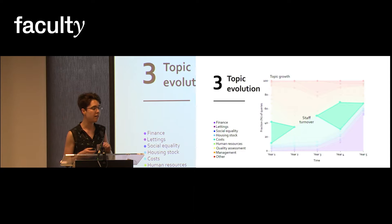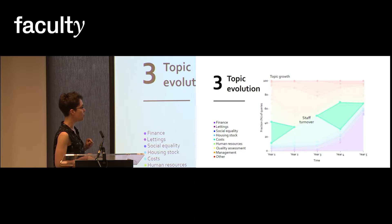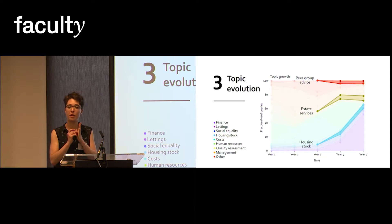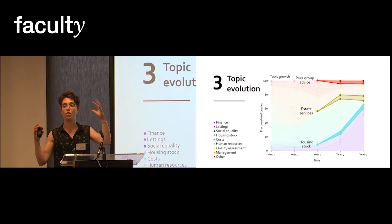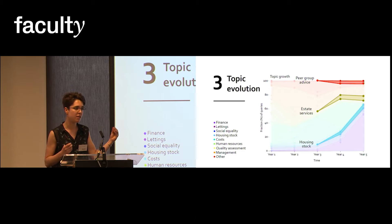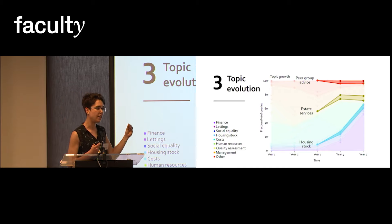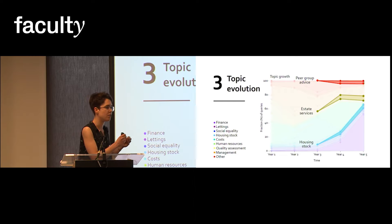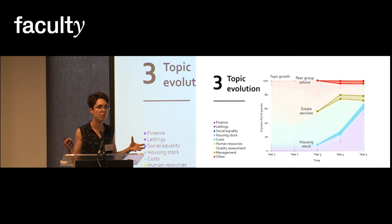But importantly, this model is able to identify emerging topics — topics that start at a given point in time and then gradually grow. What that means is that you are identifying growing concerns, and with that, you can develop strategies to prevent these growing concerns from becoming actual real problems.